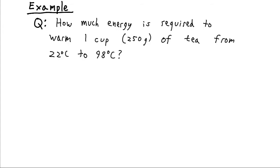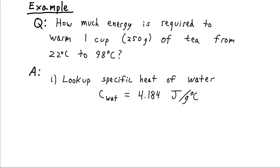Here's a useful question: how much energy is required to warm a cup of tea from 22 degrees Celsius — about room temperature — up to 98 degrees Celsius, almost boiling? Maybe we are a microwave manufacturer who needs to know how much energy the machine must deliver. To figure this out, we need to look up the specific heat of water. For simplicity, we'll assume this tea is basically pure water, even though mixed compounds will affect its density and heat capacity somewhat.